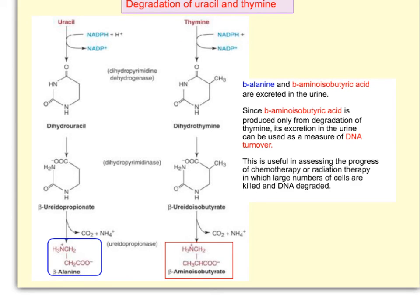Thymine is further broken down into beta-aminoisobutyrate. Beta-aminoisobutyrate is only made through this pathway, and so in chemotherapy the amount of it excreted in the urine is used as a tool to measure cell turnover in cancer therapy.